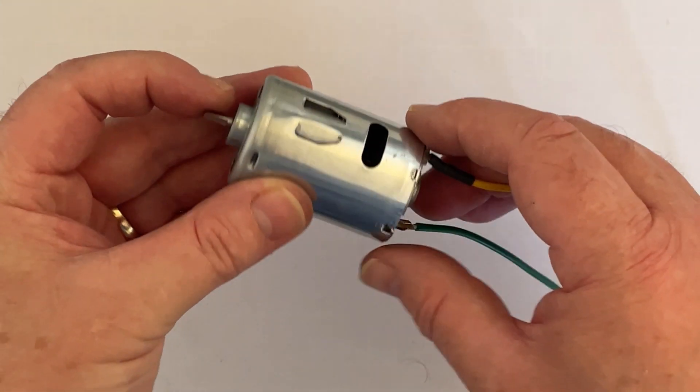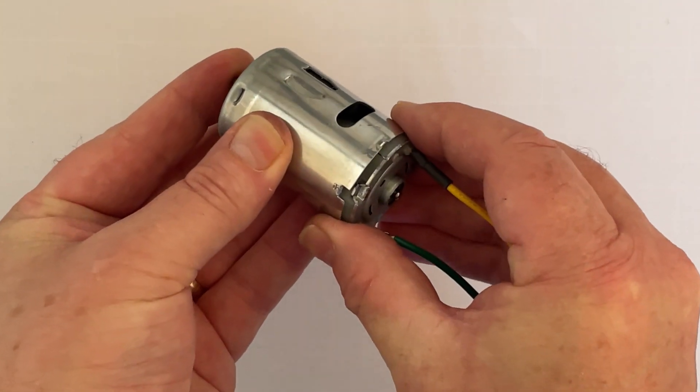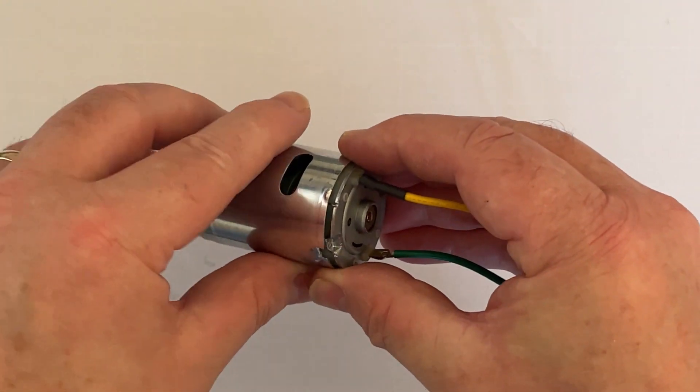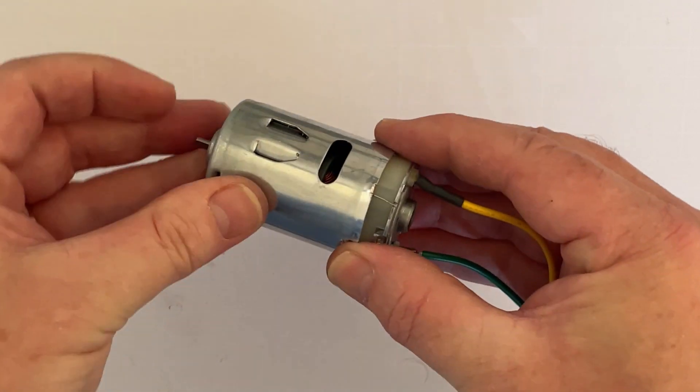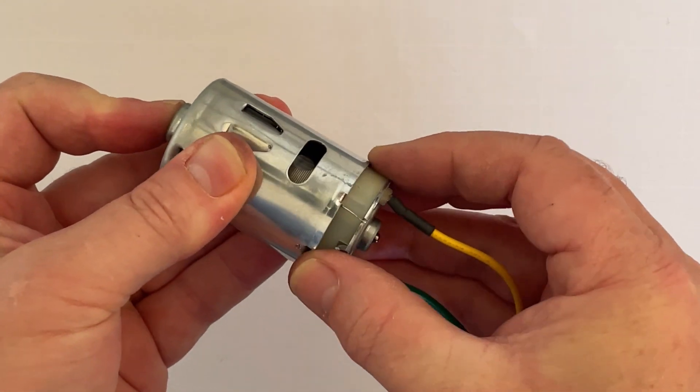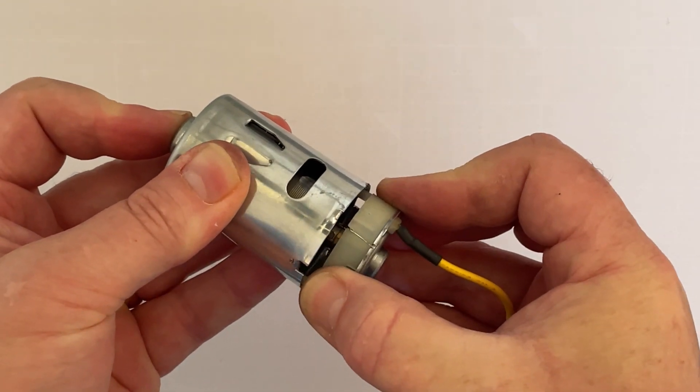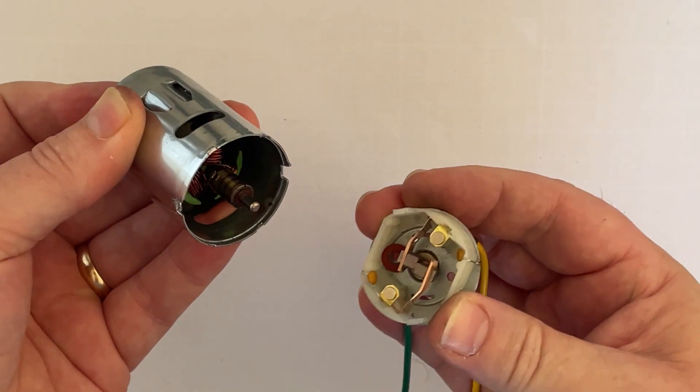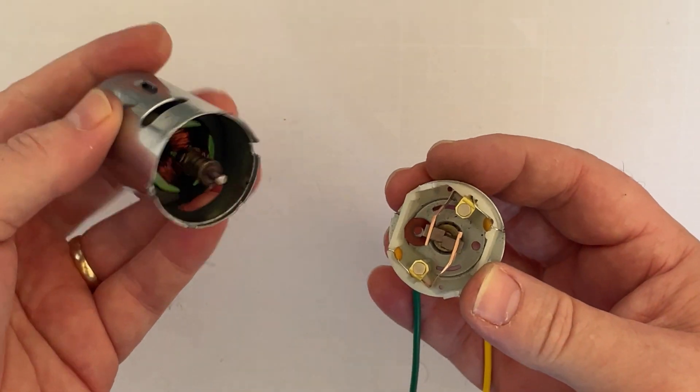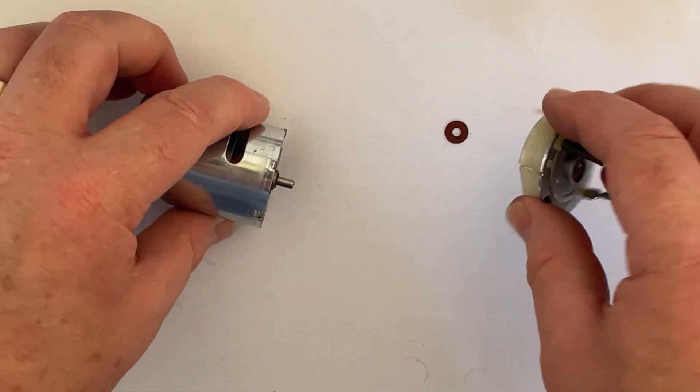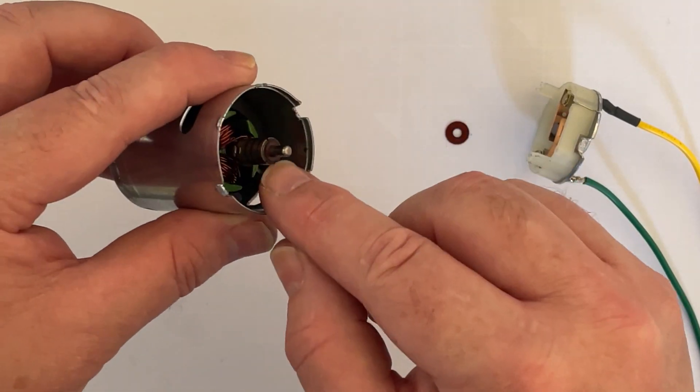Here we go then. So I've pushed hard here to move this end bell out so that we can move this all the way through. Let's see if we can pull this, it's being held by the magnets of course. All right, so what to be aware of is there is a couple of washers and spacers, one on the end here.